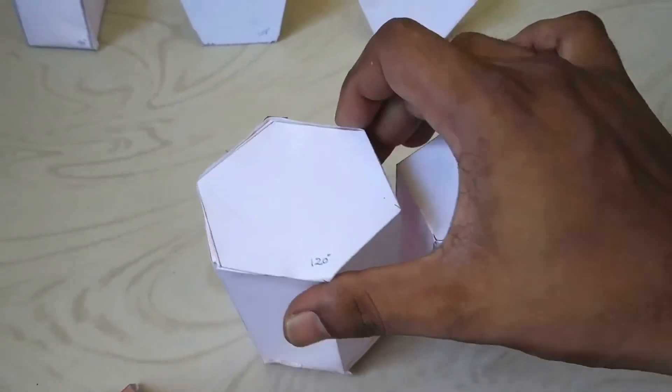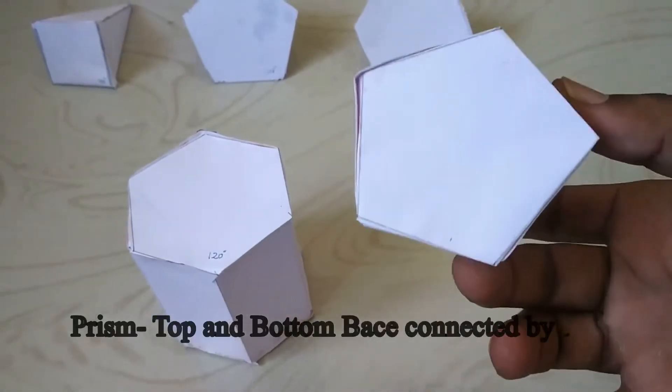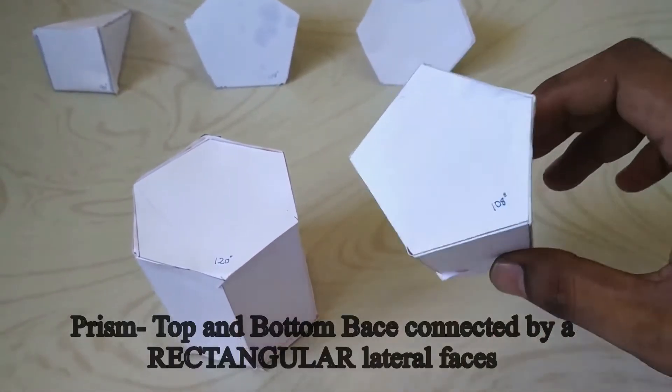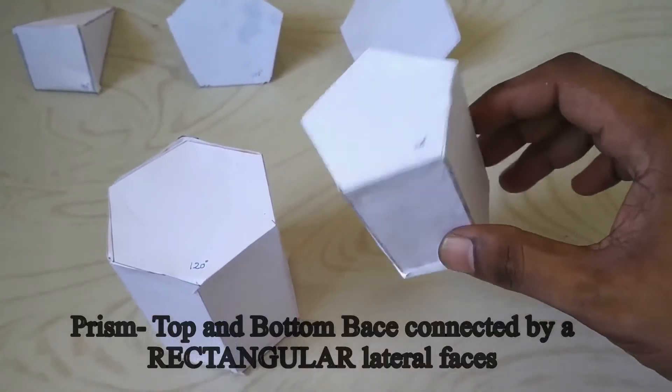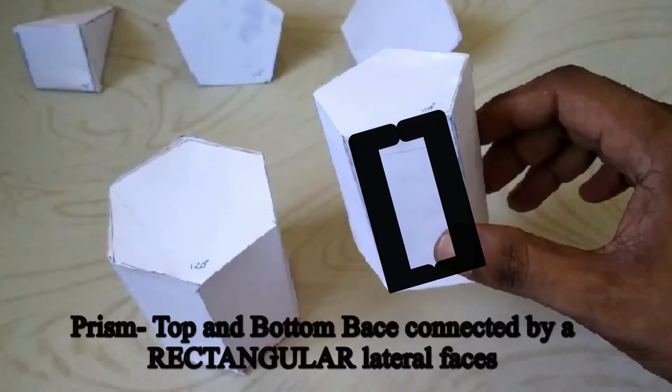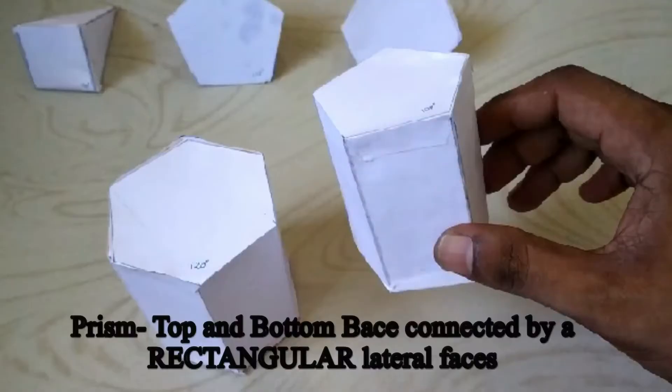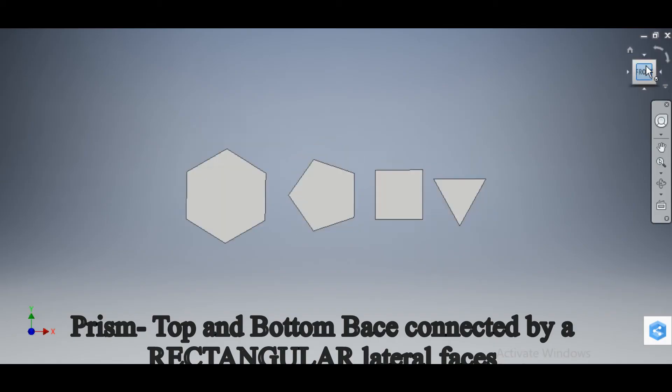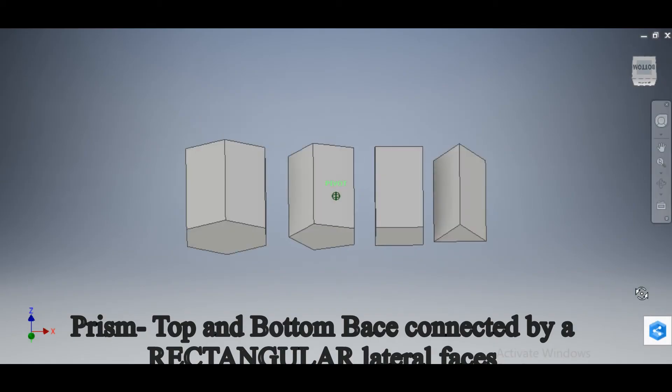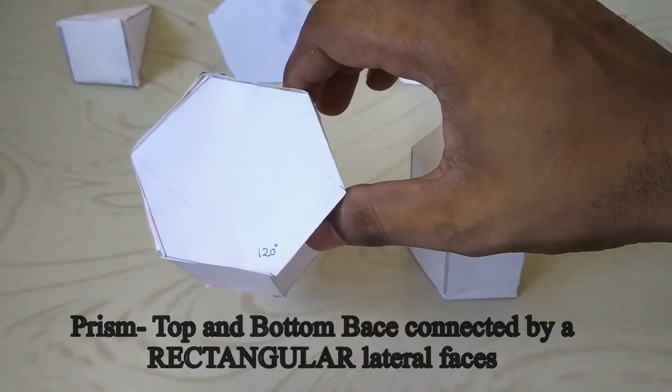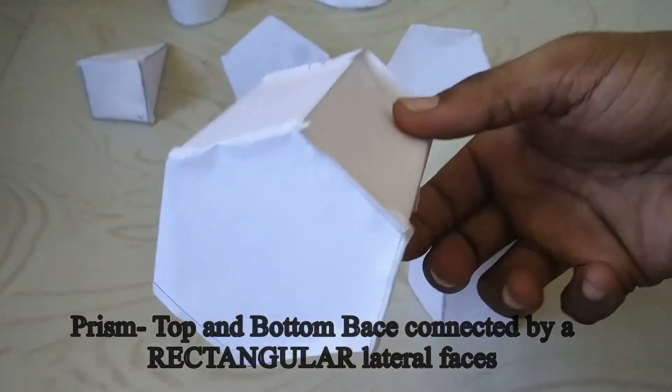a prism, we have two bases—one at the top, another at the bottom. The two bases are connected by rectangular lateral surfaces. For pentagon, five rectangular lateral surfaces. For hexagon, six rectangular lateral surfaces.